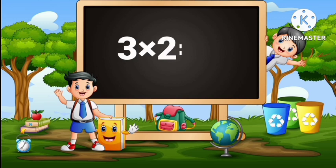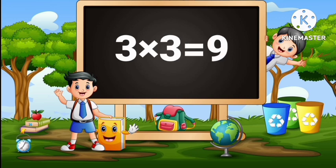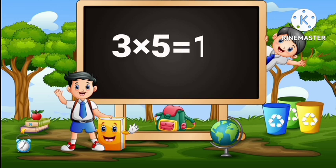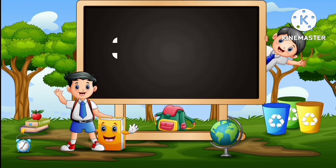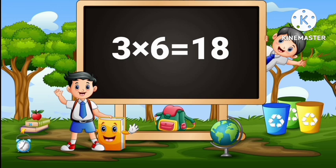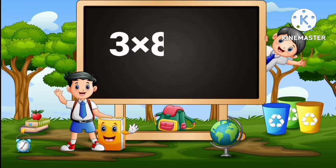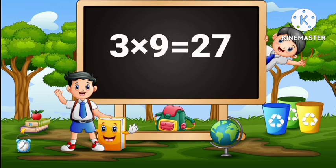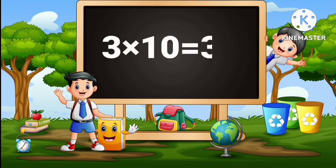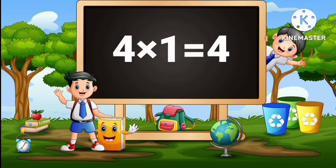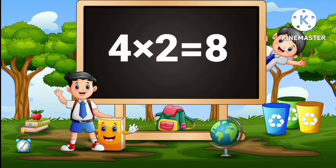3 twos are 6, 3 threes are 9, 3 fours are 12, 3 fives are 15, 3 sixes are 18, 3 sevens are 21, 3 eights are 24, 3 nines are 27, 3 tens are 30. 4 ones are 4, 4 twos are 8.